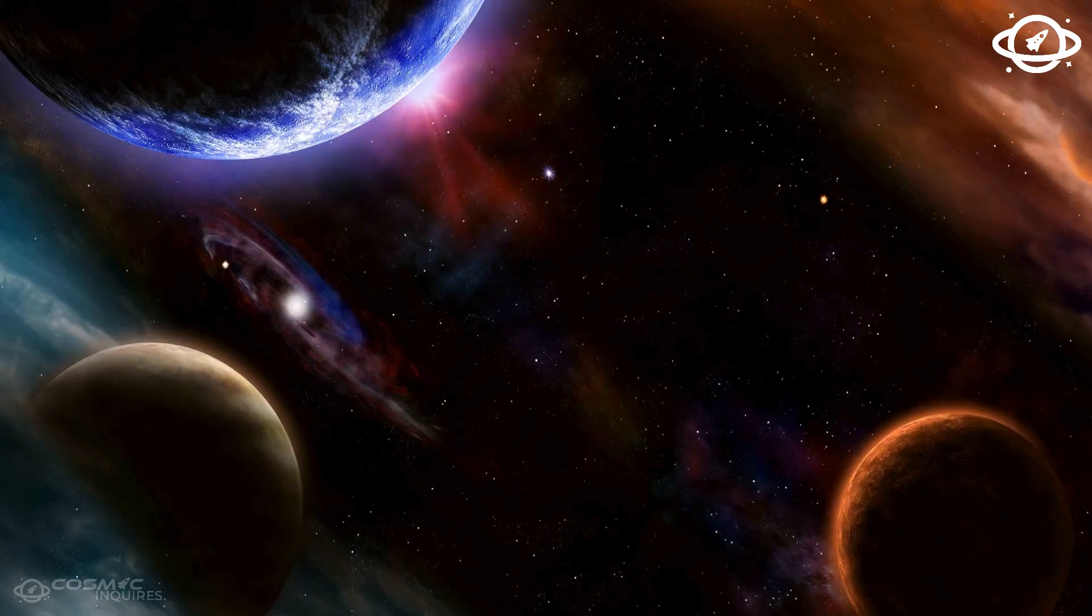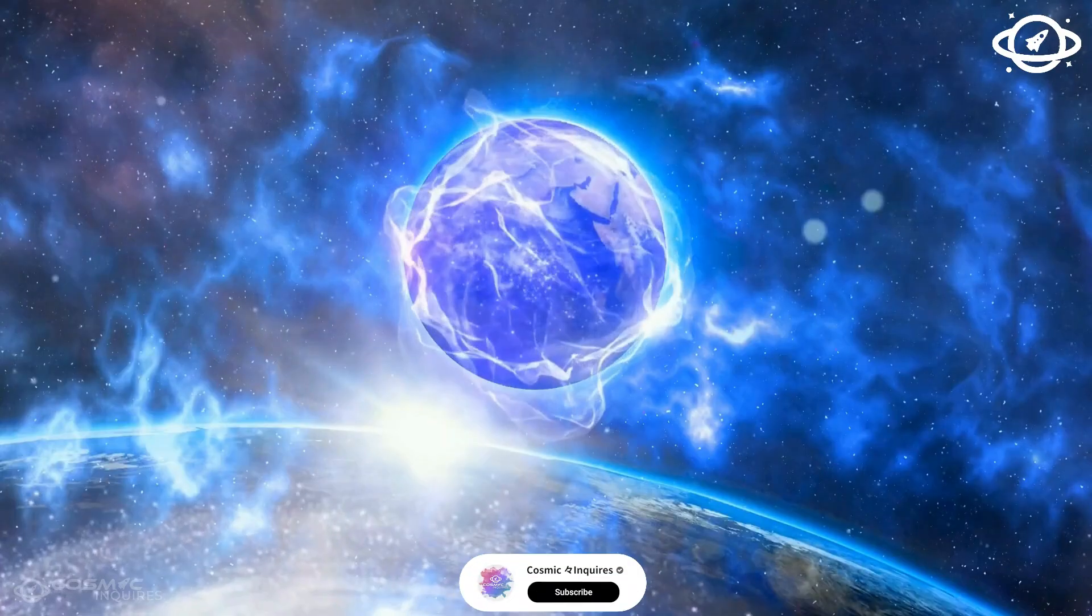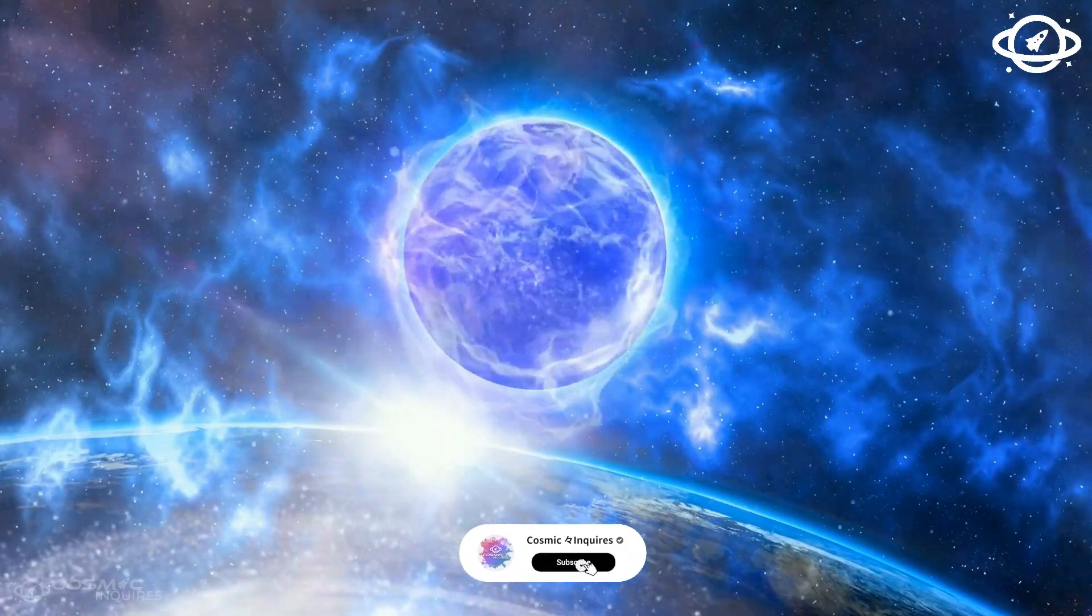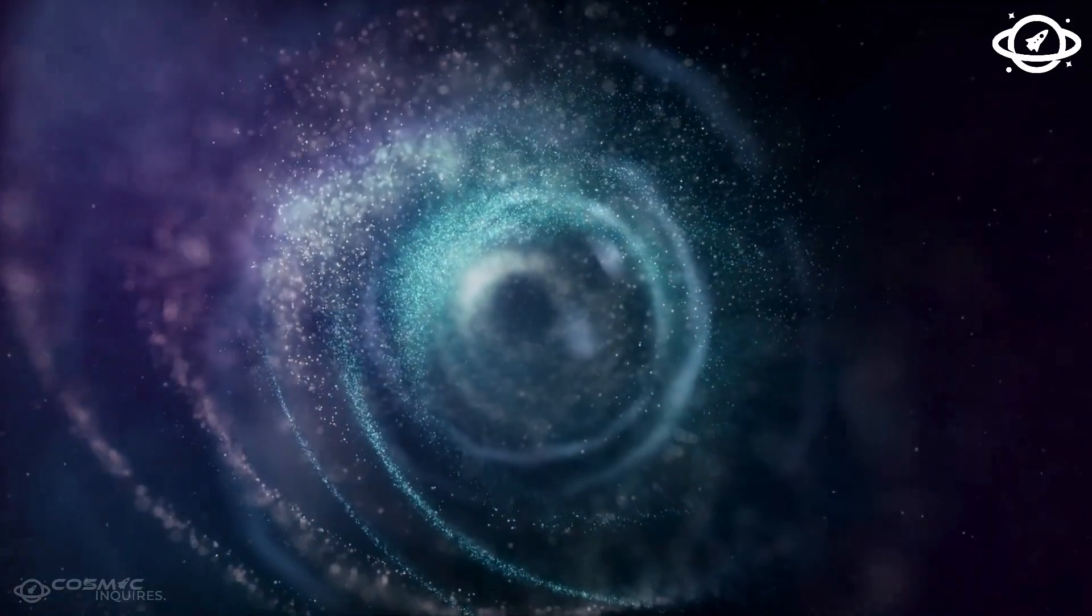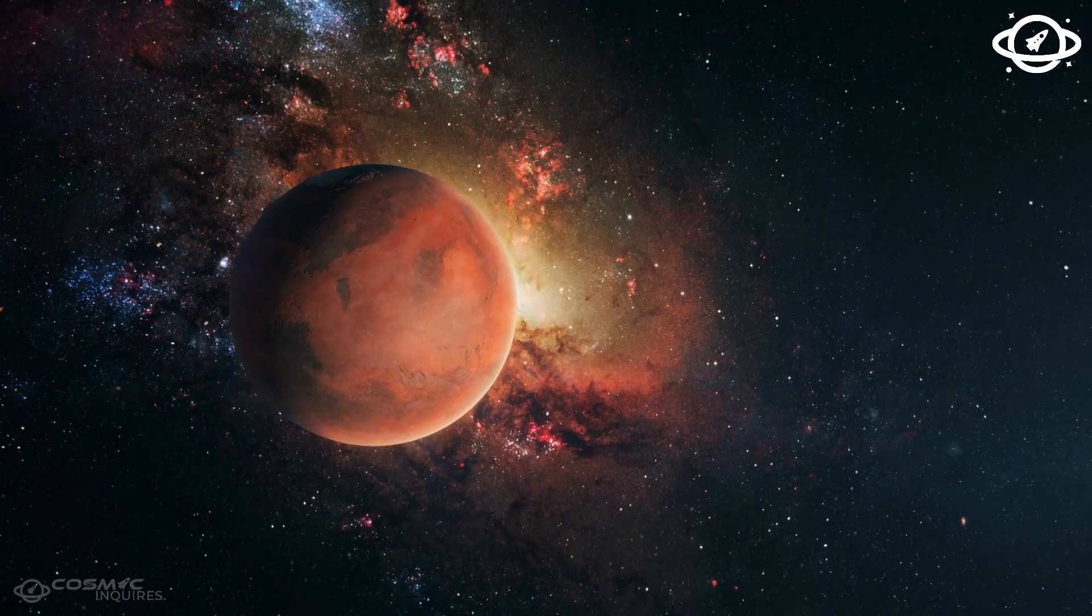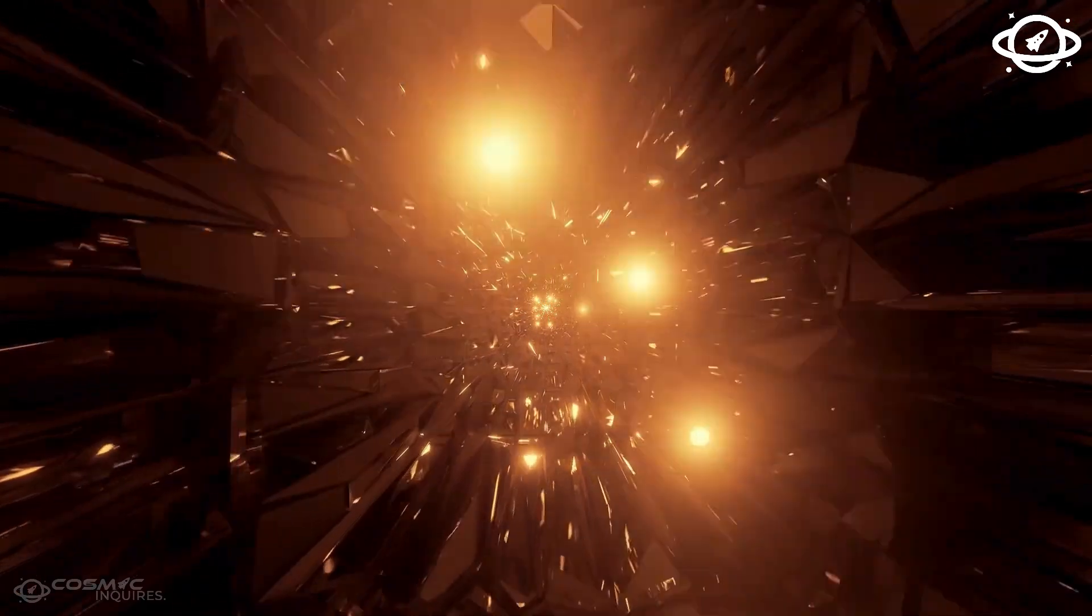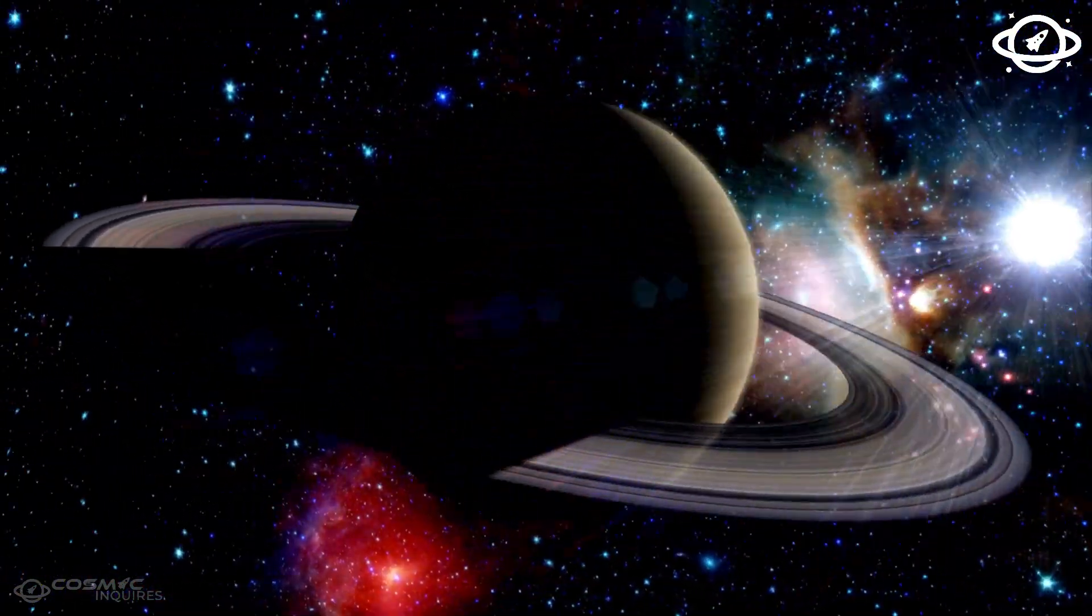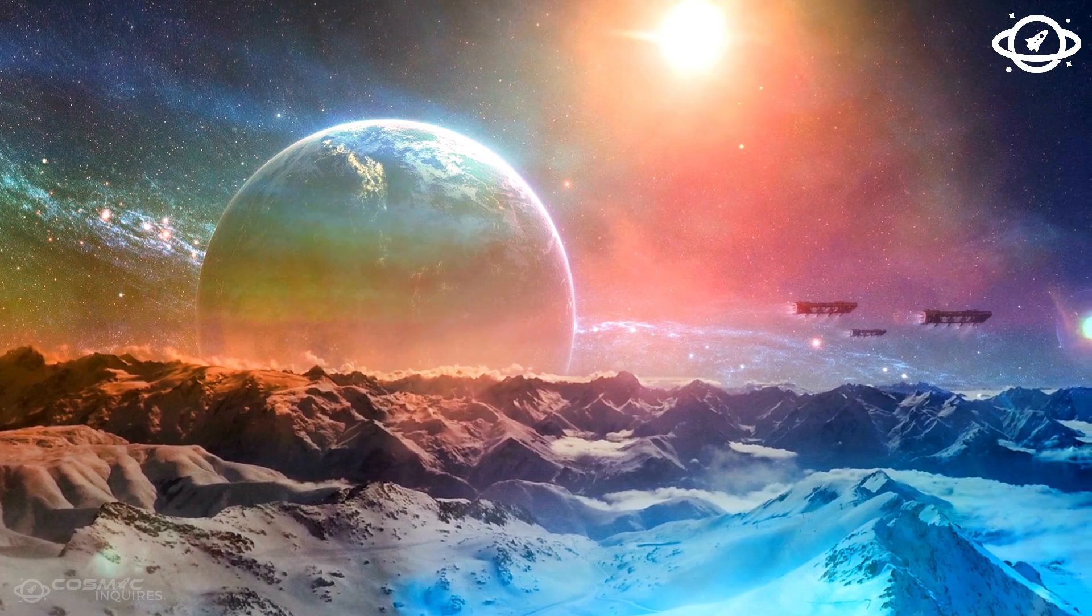Furthermore, there are observations of supermassive black holes that existed in the early universe, with masses ranging from millions to billions of times that of our sun. Understanding how these black holes attain such enormous sizes in a relatively short period of time is an ongoing challenge for scientists. One hypothesis suggests that they may have been formed through the merging of smaller black holes as they absorbed matter and combined with other black holes.